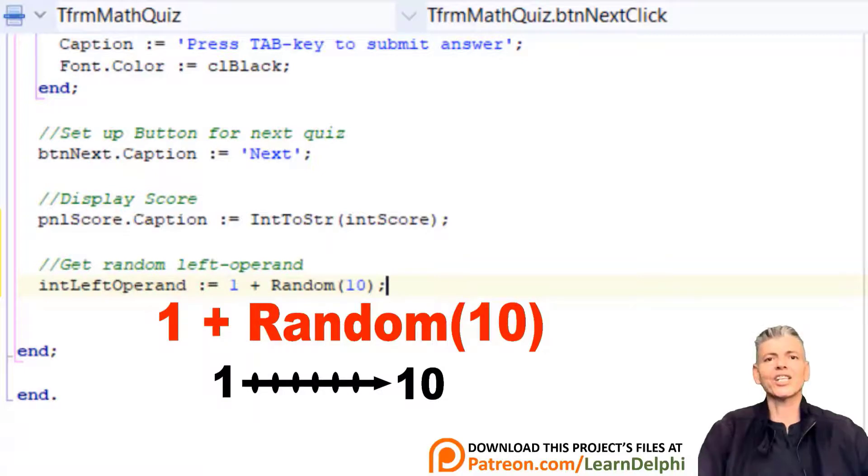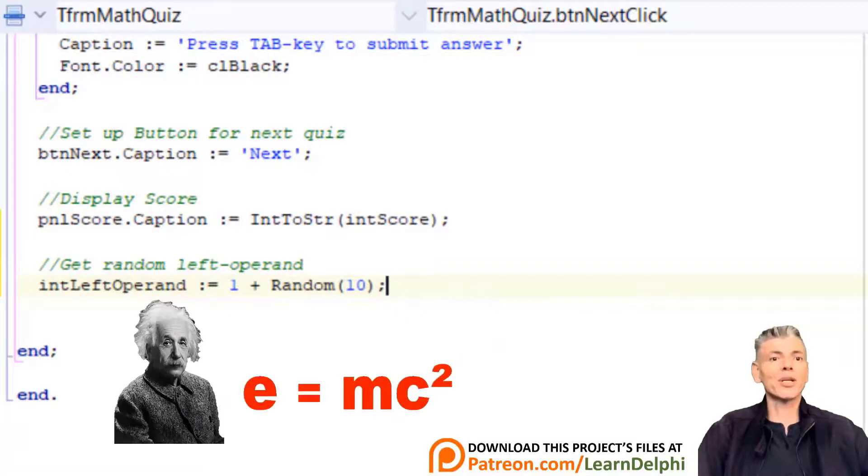But there is a catch. A computer's processor can't just pick something out of thin air. It must use a predefined algorithm to do its work. So the processor needs a starting point or a seed to know where to start picking random numbers. So sometimes it may look like the randomization becomes repetitive. That is because of the predefined algorithm that may use the same starting point or seed to pick a random number.